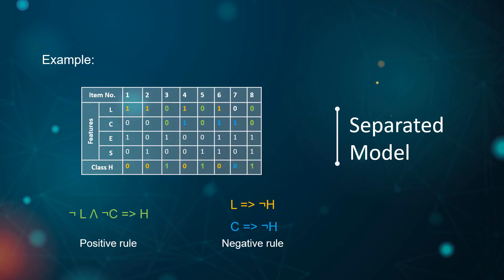Consider the data set in the example. We can iteratively construct decision rules for the positive instances: if L is false and C is false, then class H is true. For the negative instances: if L is true, then class H is false; and if C is true, then class H is false.